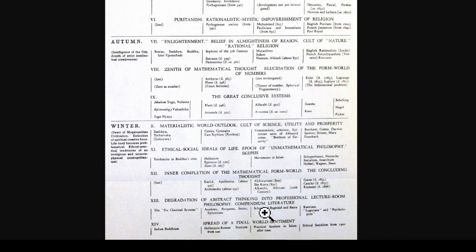Then the spread of a final world sentiment: Indian Buddhism, Hellenistic-Roman Stoicism, fatalist tendencies in Islam, and Ethical Socialism from 1900 onward. Spengler also hurls an arrow at professional philosophy departments — 'degradation of abstract thinking into professional lecture-room philosophy.' This metaphysical-philosophical cycle works pretty well in terms of the evolution of the Indian mind, but he is not taking account of the art.